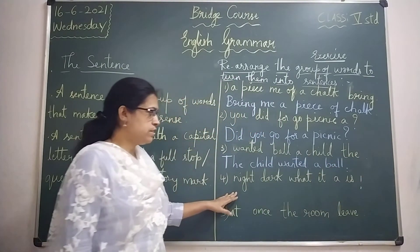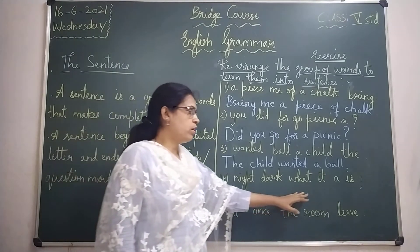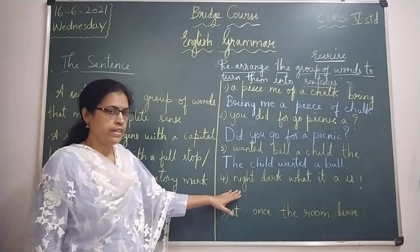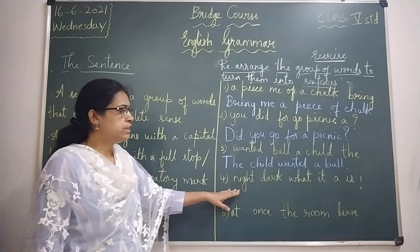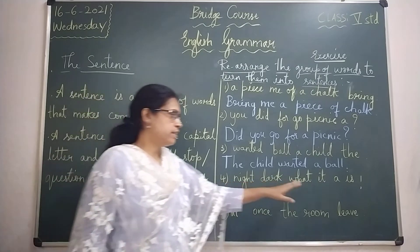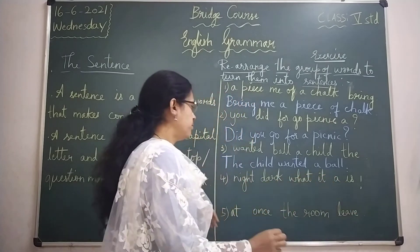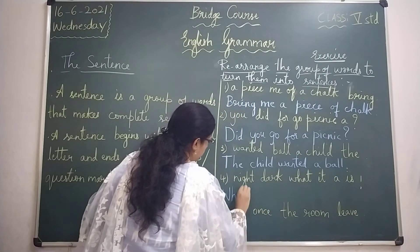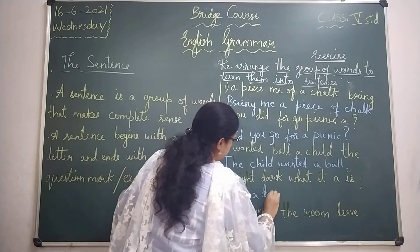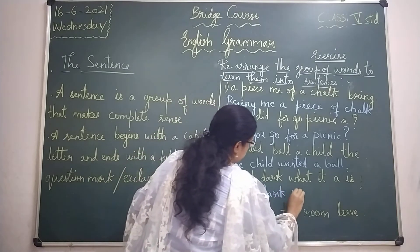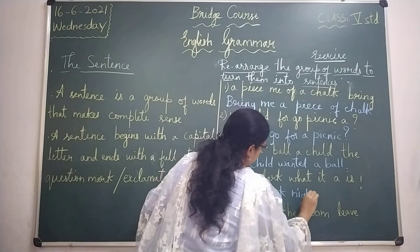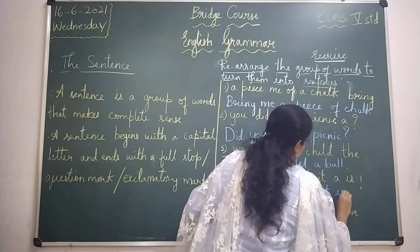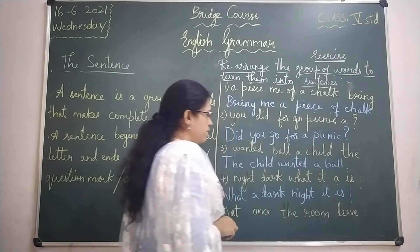The next group of words is: 'night, dark, what is.' We have to rearrange it again. So it becomes: 'What is dark?' — or something similar with an exclamatory or question mark at the end. Begin with a capital letter and end with the appropriate punctuation mark.